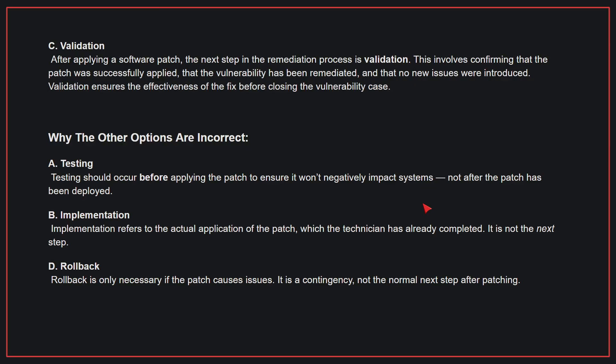This involves confirming that the patch was successfully applied, that the vulnerability has been remediated, and that no new issues were introduced. Validation ensures the effectiveness of the fix before closing the vulnerability case. Why the other options are incorrect? A: Testing should occur before applying the patch to ensure it won't negatively impact systems, not after the patch has been deployed. B: Implementation refers to the actual application of the patch, which the technician has already completed — it is not the next step. D: Rollback is only necessary if the patch causes issues; it is a contingency, not the normal next step after patching. Therefore, the correct answer is C.